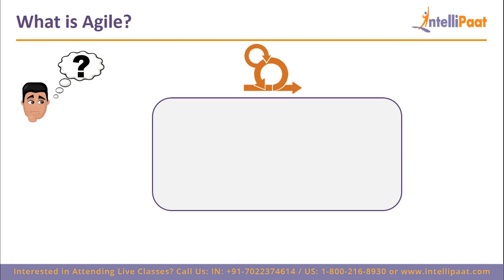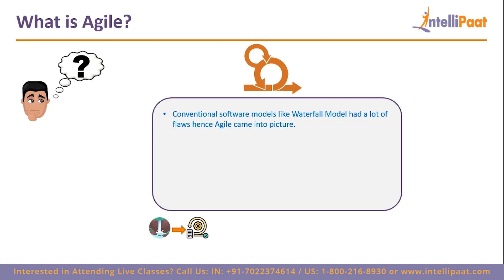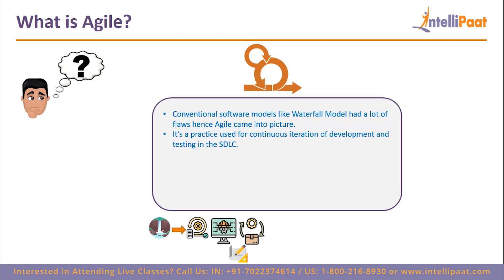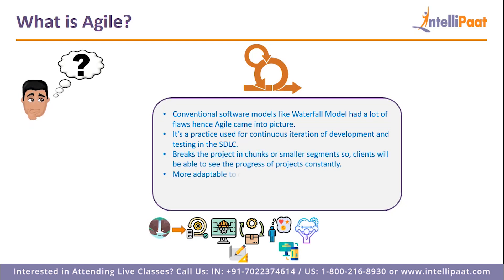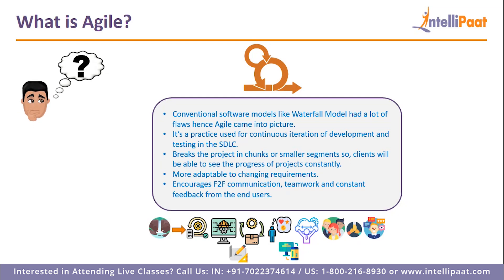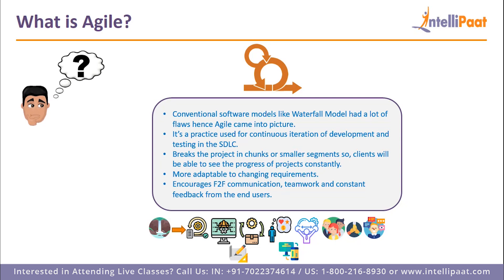Let us discuss what exactly is Agile. Earlier, conventional software models like the waterfall model were used for software development, and they had a lot of flaws — customers or end users were only able to see the final software product after the completion of the project. Once an application was in the testing phase, it was difficult to go back and make changes as per the customer's need, which resulted in high uncertainty and risks. This is where Agile software development came into the picture. It was specifically focused and designed to curate the needs of rapidly changing circumstances by encouraging incremental software development. Agile methodology includes customers more effectively in the project, and they are able to see project progress from beginning to end. Agile is a practice used for continuous iteration of development and testing in the software development lifecycle or SDLC.